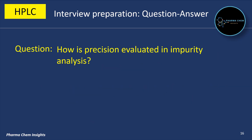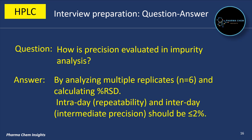Next question: how is precision evaluated in impurity analysis? Precision is evaluated by analyzing multiple replicates (n=6) and calculating percentage RSD. Intraday repeatability and intermediate precision should be less than or equal to 2%.